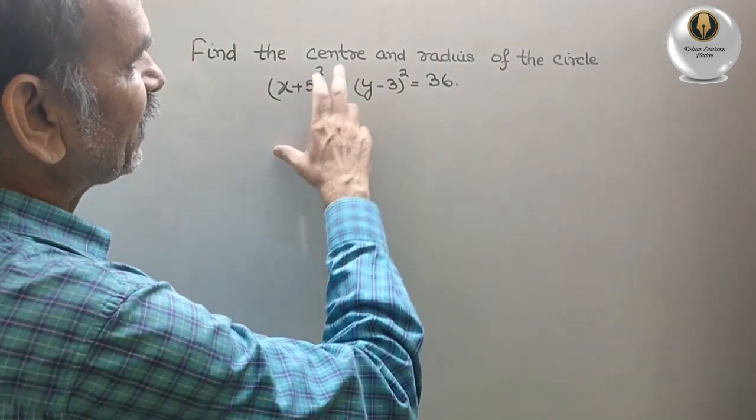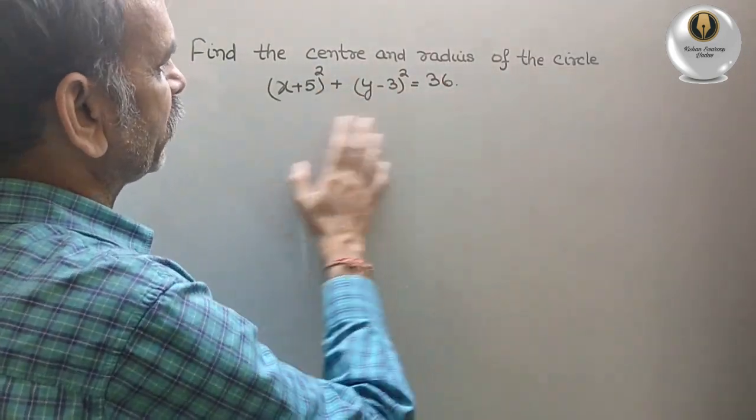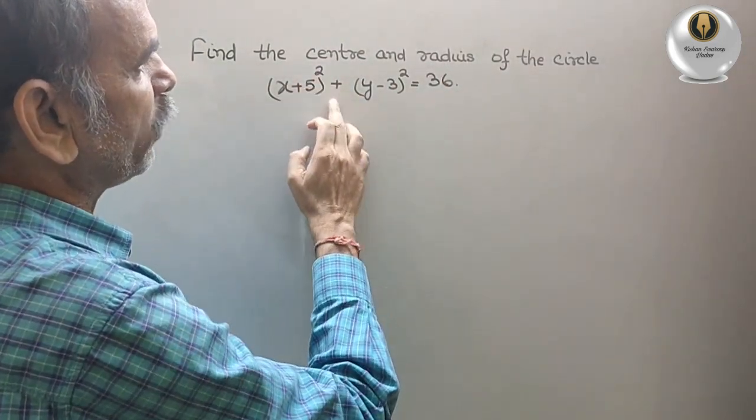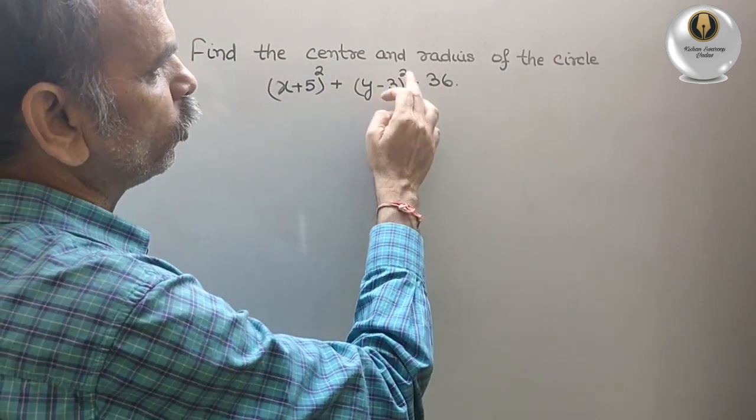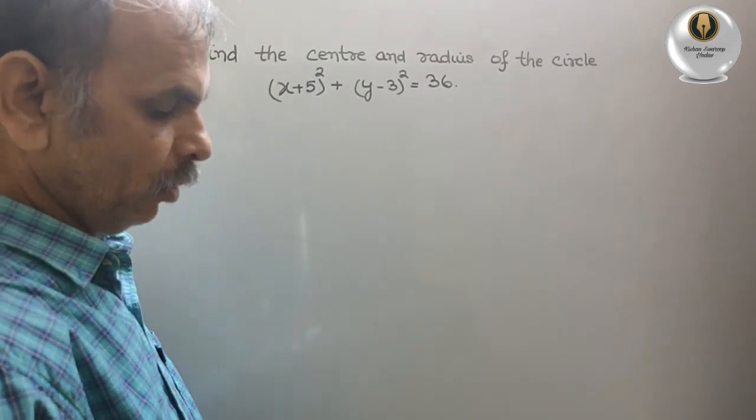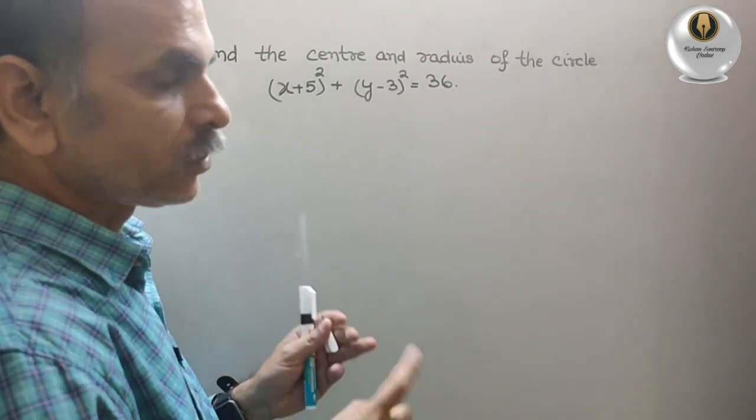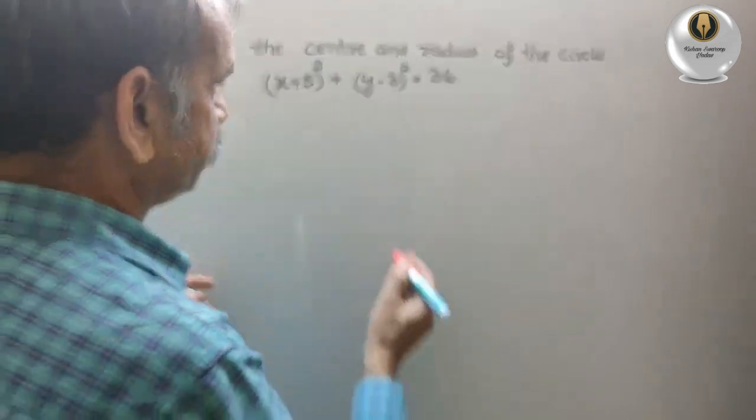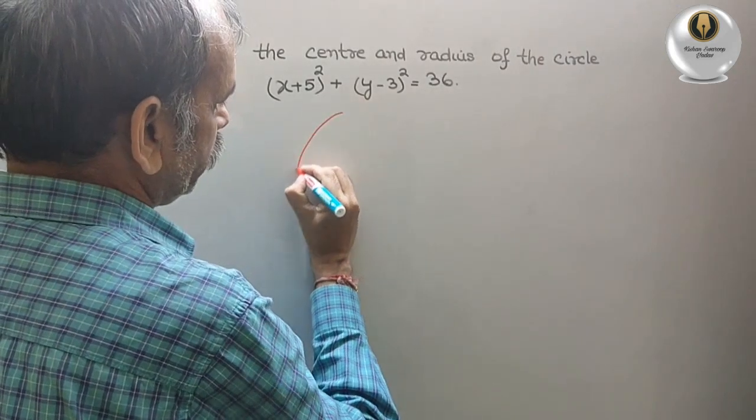Your question is find the center and radius of the circle (x+5)² + (y-3)² = 36. Now here suppose there is a circle, this is the circle.